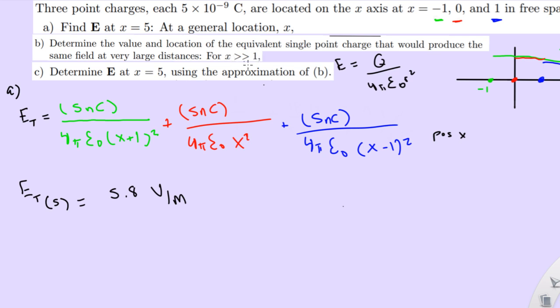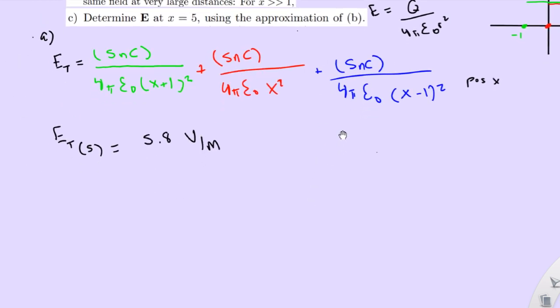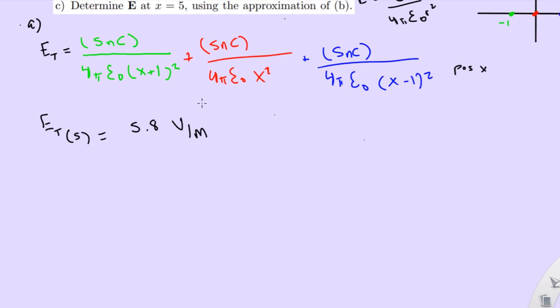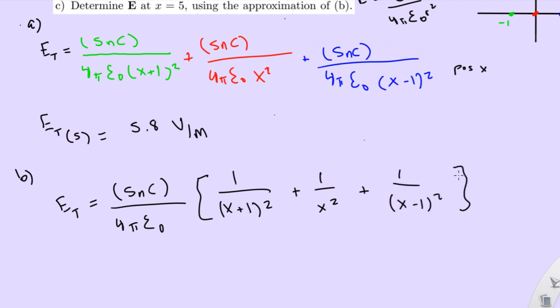So x is much greater than 1. That's pretty simple. What does it mean if x is much greater than 1? It essentially means the 1 is irrelevant, right? So for B, actually before I do that, let me notice that we could just factor the 5 nanocoulomb over 4π epsilon naught. I think it'll be easier to see if we look at it like this. It's just 1 squared, then you factor that as x² plus 1 over (x - 1)².